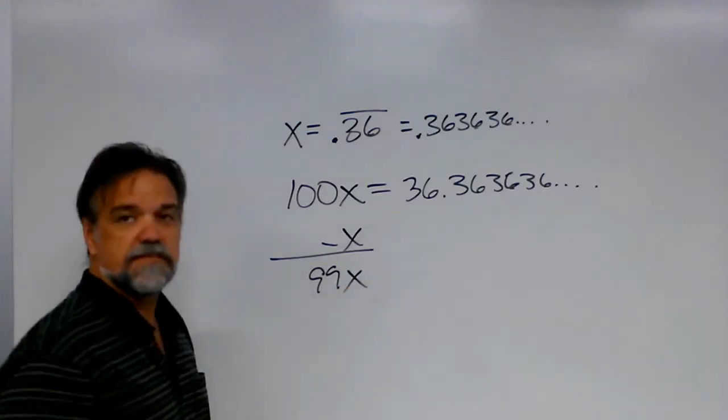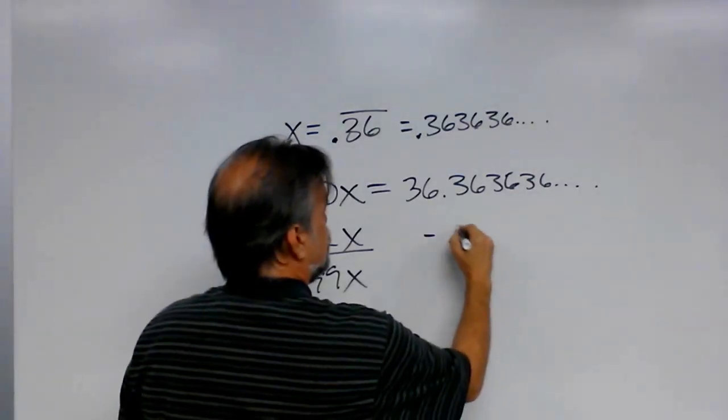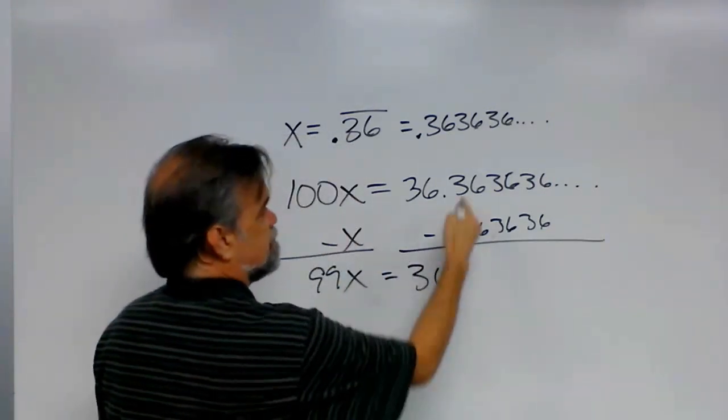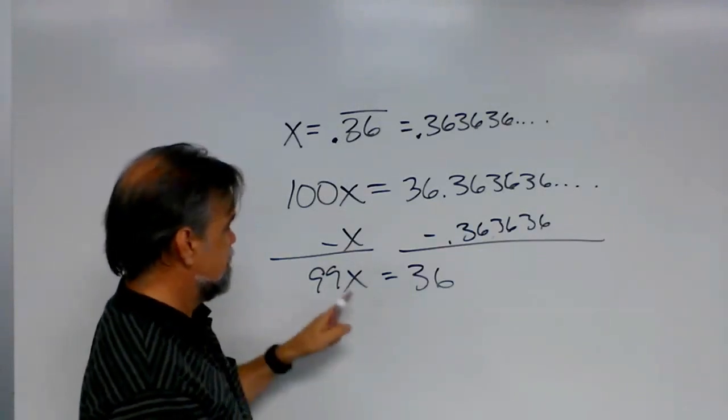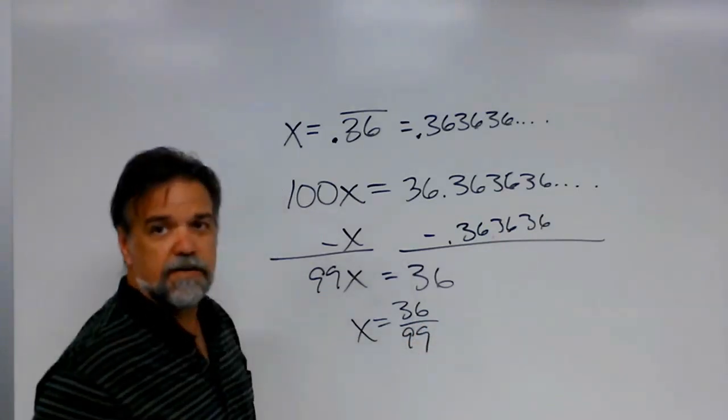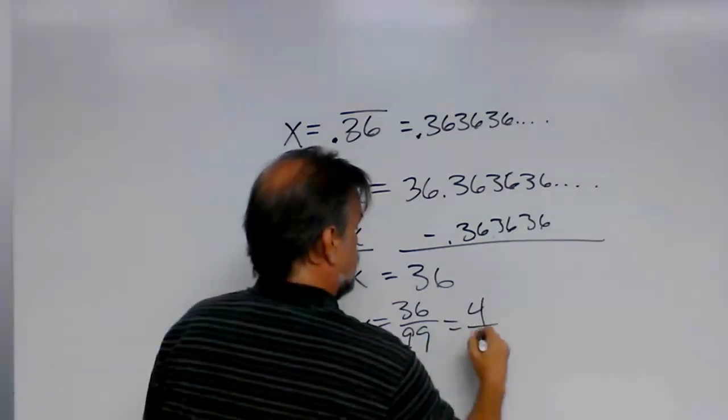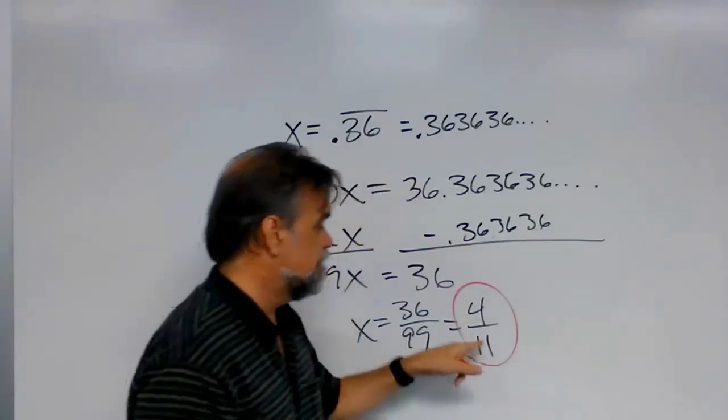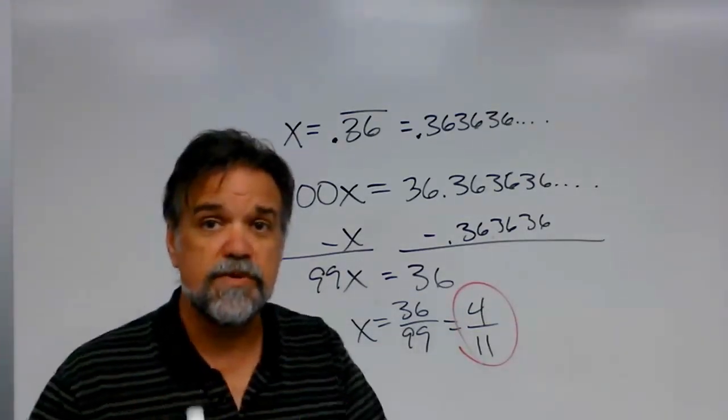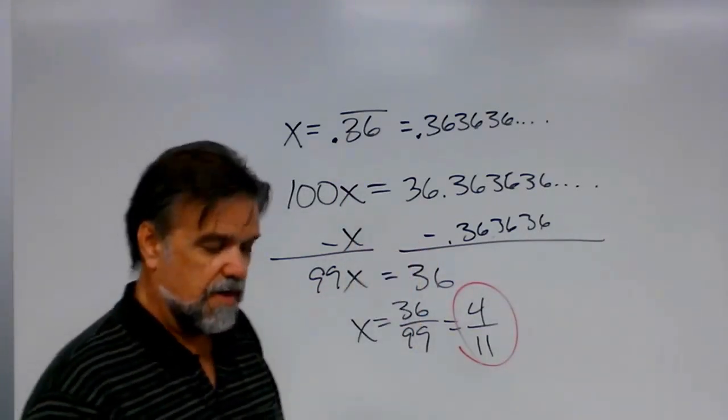Subtract x from both sides. So, I'm going to get 99x on this side. And on this side, I'm going to subtract x, which is 0.363636. So, minus 0.363636, and I get 36 because all of this just takes care of itself. So, I get 99x equals 36. So, x must equal 36 over 99. And you're probably saying, whoa, hey, hold it. We can simplify that. Those are both multiples of 9. You're right. This is 4 over 11. And sure enough, if you divide 11 into 4, you're going to get 0.3636363636. So, what was different this time? What was different is we had two repeating decimals. And so, what we did is we multiplied both sides by 100.